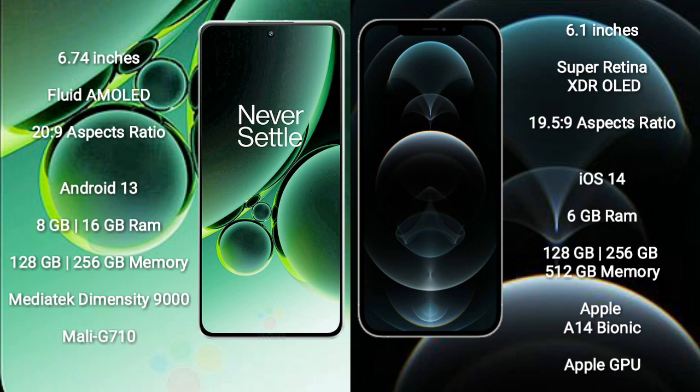OnePlus Nord 3 comes with 8GB or 16GB RAM and 128GB to 256GB internal storage. It is powered by the MediaTek Dimensity 9000 processor with a Mali-G710 GPU.